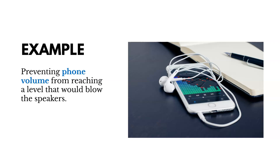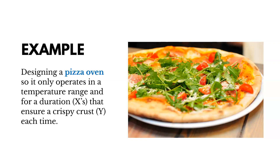An example might be if you design phones — you build a feature in that prevents phone volume from reaching a level that would blow the speakers. You build that in to prevent the mistake from happening. Here's another example: maybe you design a pizza oven so it only operates in a temperature range and for a duration that ensures a crispy crust each time. We want to make sure these inputs stay within certain ranges to get a good result every time and prevent a mistake of burnt pizza from happening.